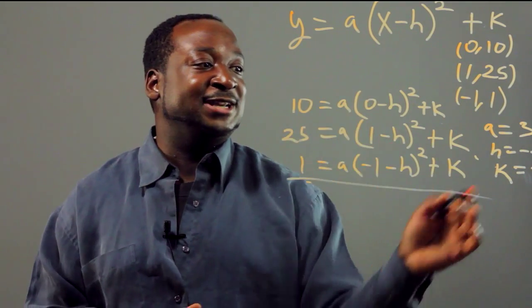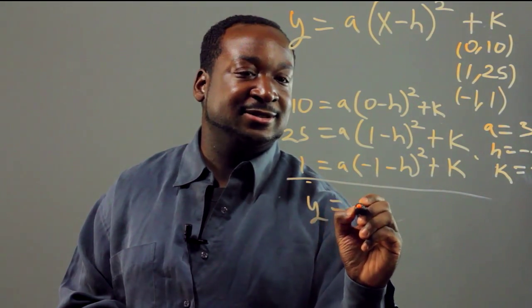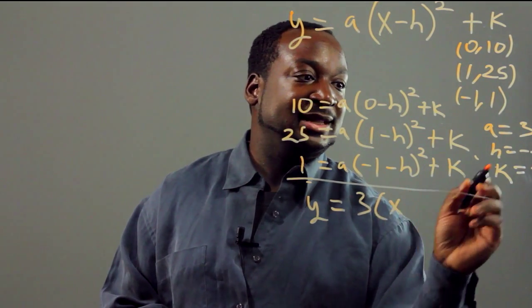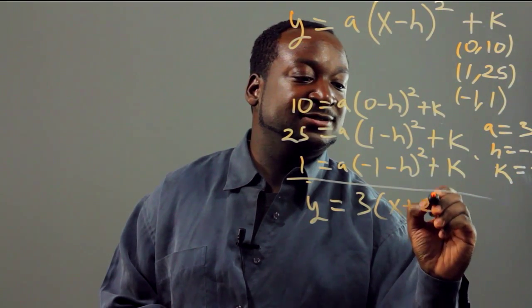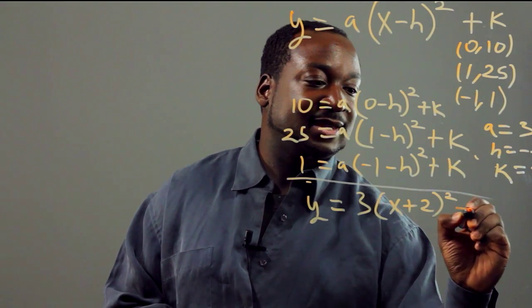Now we have our equation and we put it in, we get y equals 3 times (x plus 2) quantity squared minus 2.